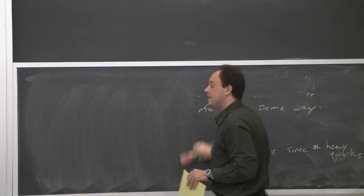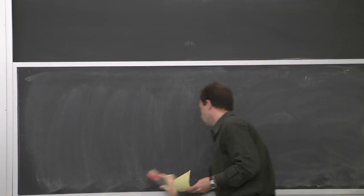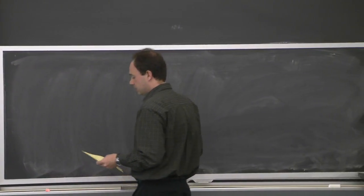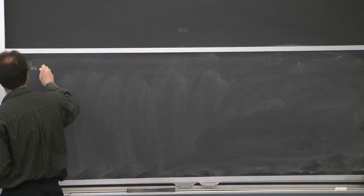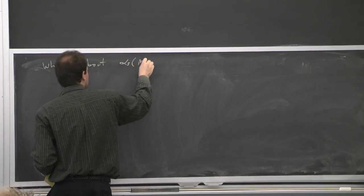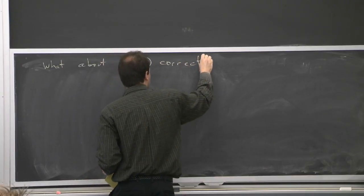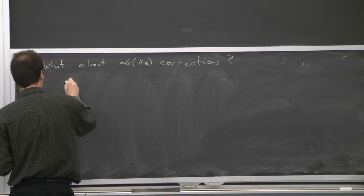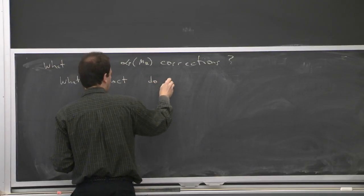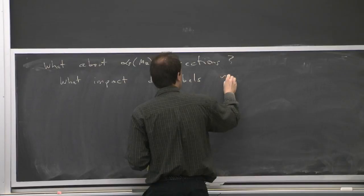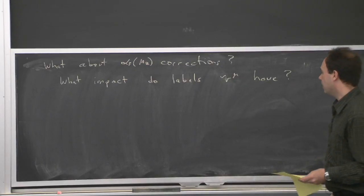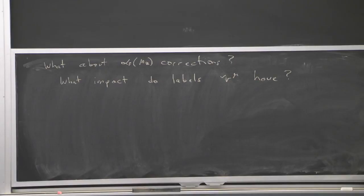In the remaining few minutes, I want to get started on something related to a question we left aside: what about alpha_s corrections? A couple of interesting things here, but basically it boils down to: we've already seen how to do matching and renormalization group evolution. Now we have these extra labels, so we can ask what impact having labels has on that whole story of matching and RGE. There are examples where it does have an impact.